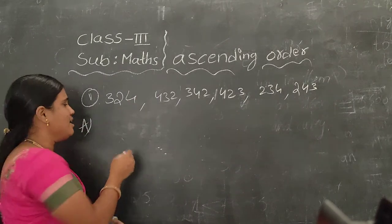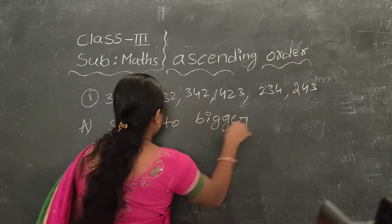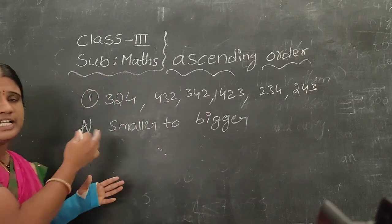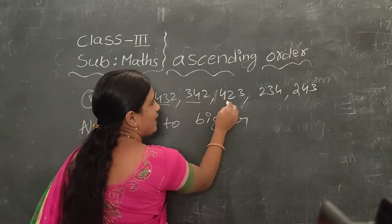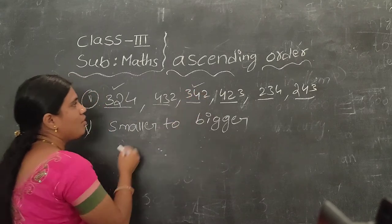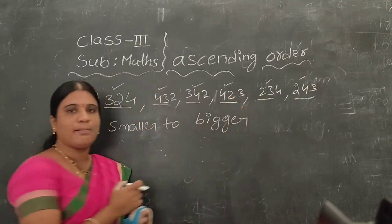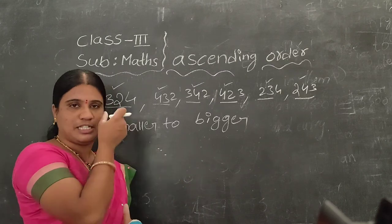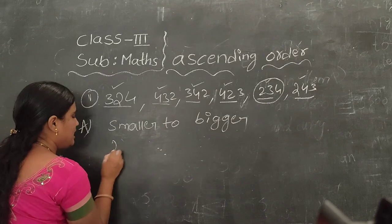For example, here are the numbers: 324, 432, 342, 423, 234, and 243. We have to arrange these in ascending order. We have 300 numbers, 400 numbers, and 200 numbers. From these, 200 is the smallest hundred, so we select the 200 numbers first. The smallest number is 234, and the remaining 200 number is 243. The 200 numbers are finished.